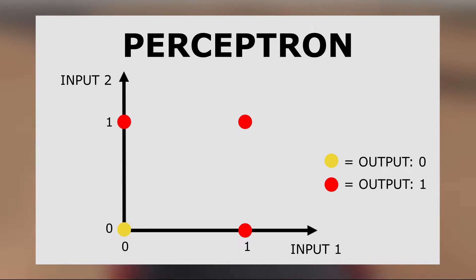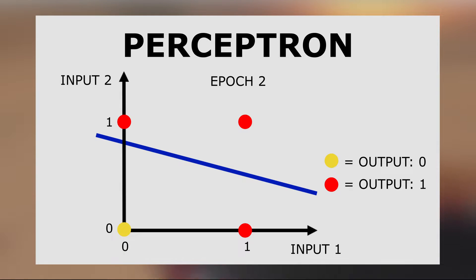To visualize what happens in this example, we can draw a graph representing the values in the OR statement. What a neuron does is it simply draws a line that separates the values that should give an outcome of 1 from those that should give an outcome of 0.